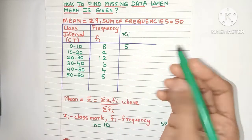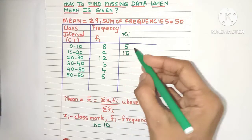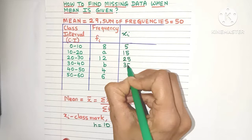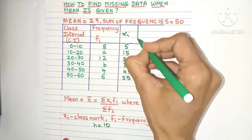So just add it to the class mark. 5 plus 10 equals 15. See, this is the next class mark. Repeat the process to get 25, 35. In this way you can get all the class marks.